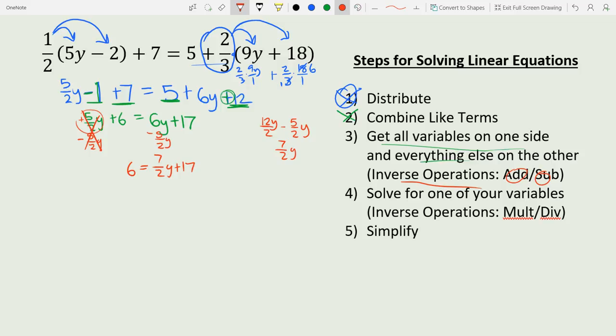Now we need to get all our non-y's onto the other side, so we subtract 17. When we take 17 minus 6, we get 11, and it's negative 11 because the 17 has a bigger absolute value.